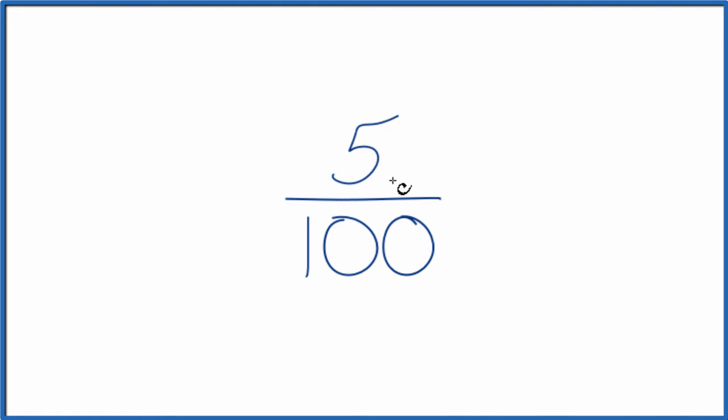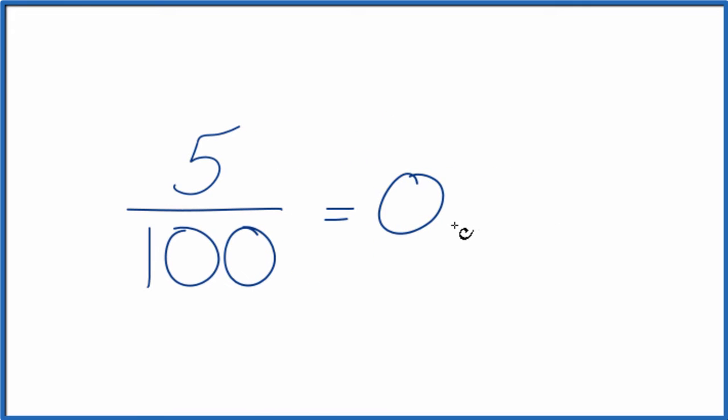You can take this 5, divide it by 100 on your calculator, and that would give you 0.05. So 0.05, that's equivalent, that's equal to 5 over 100.